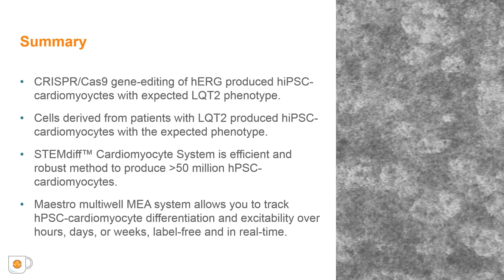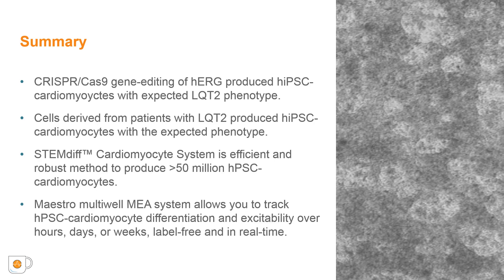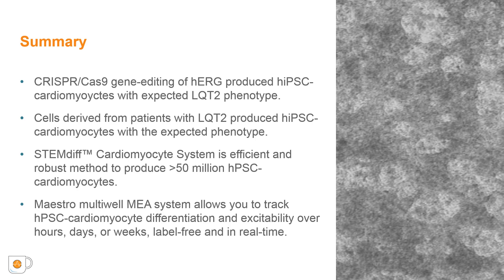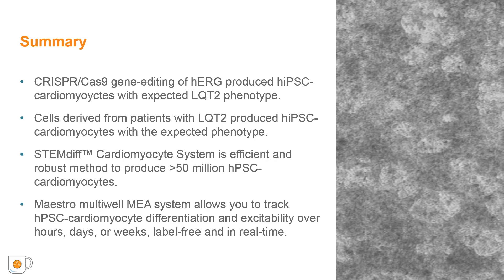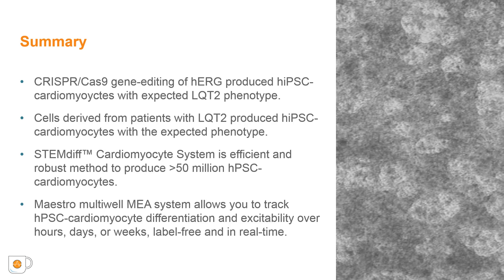In summary, I've shown that the CRISPR-Cas9 gene editing system can be used to target HERG to produce HPSC-derived cardiomyocytes with the expected long QT phenotype. Cells derived from patients with long QT also produce HPSC-derived cardiomyocytes with the expected phenotype, for example, the prolongation of the field potential duration. The STEMdiff cardiomyocyte system is an efficient and robust method to produce many HPSC-derived cardiomyocytes for disease modeling, and the Maestro multi-well MEA system allows tracking of HPSC cardiomyocyte differentiation and excitability over hours, days, and weeks, label-free and in real time.